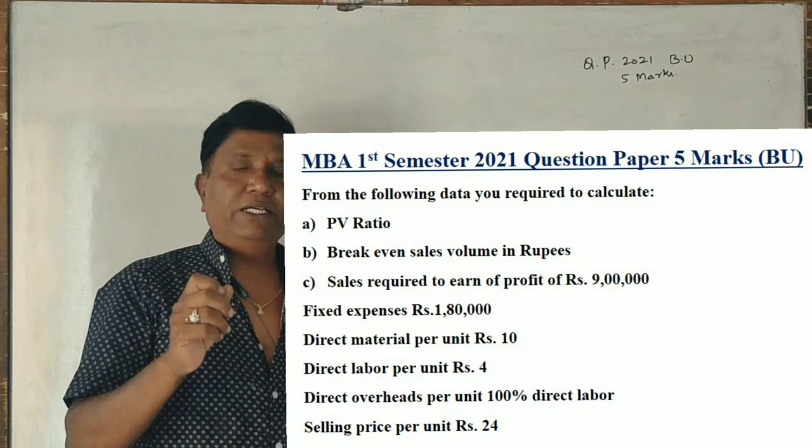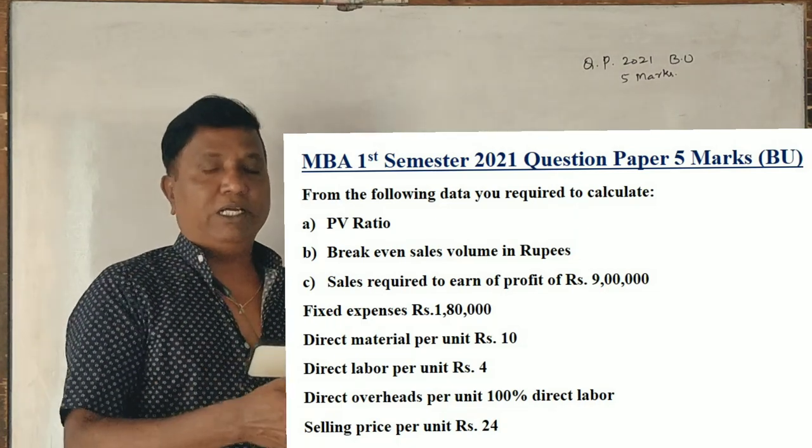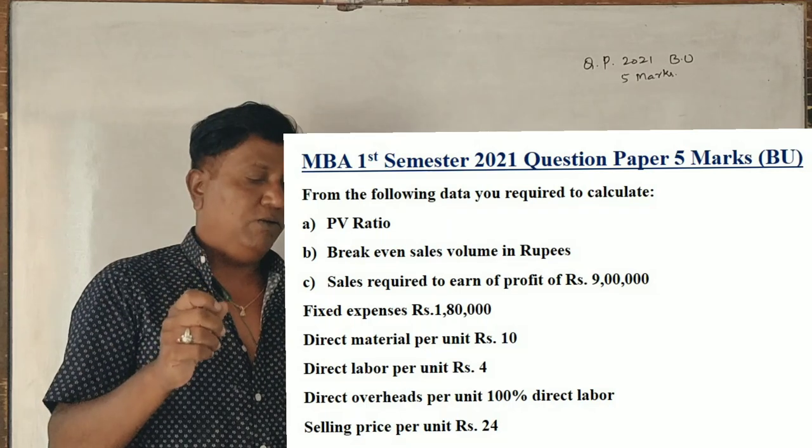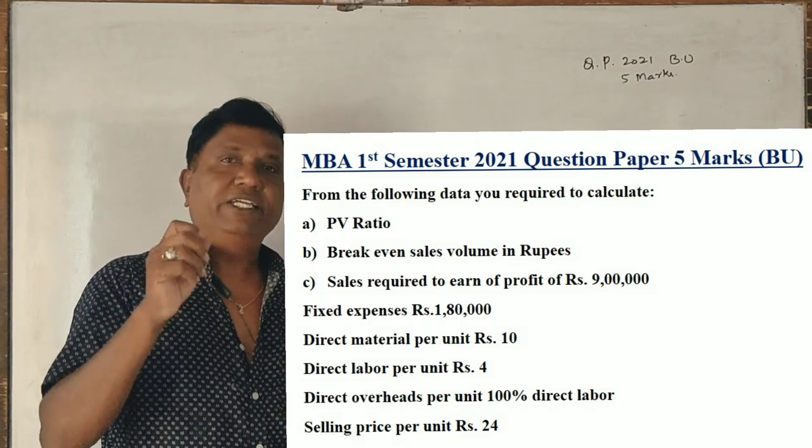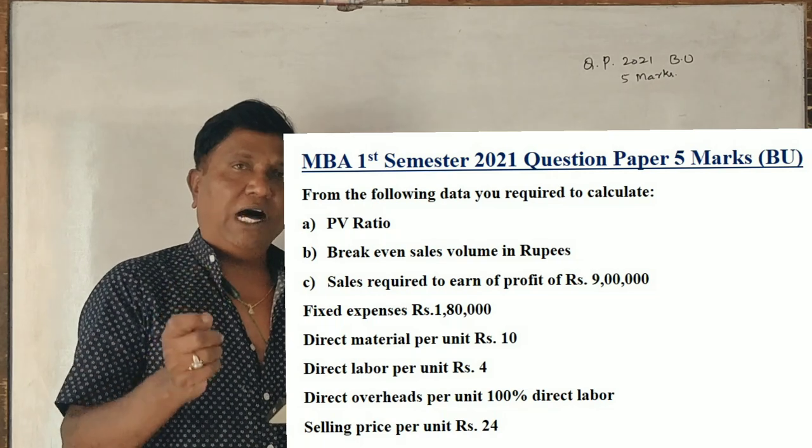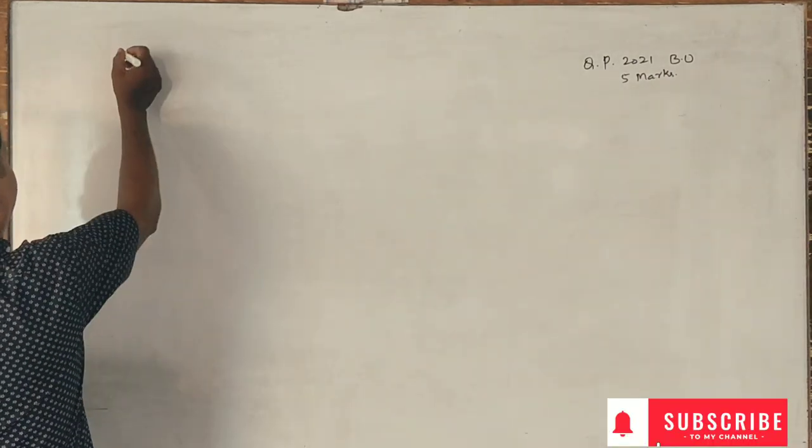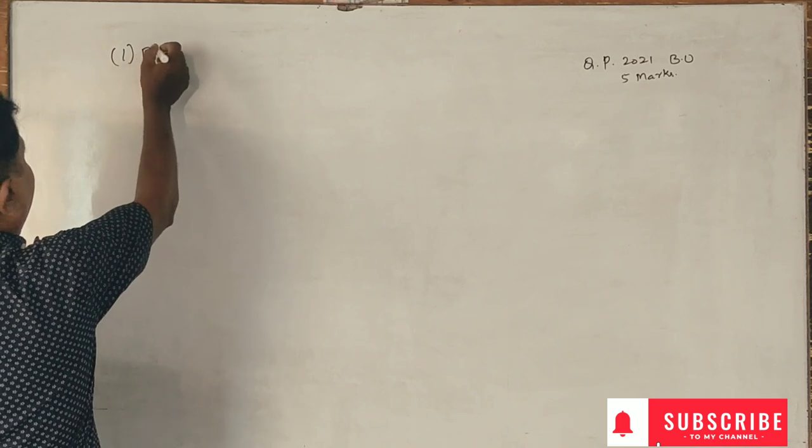Now, we have the selling price and variable cost per unit. Now, break-even sales in units can be calculated. Break-even sales can be converted instead of in units value.